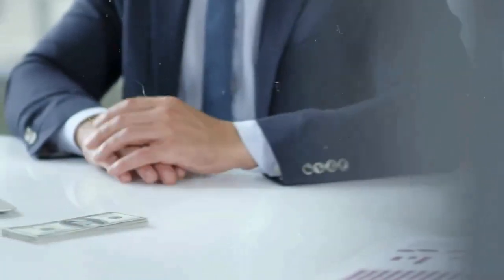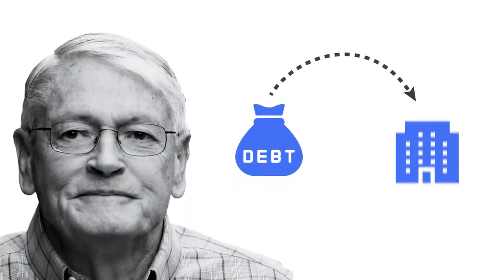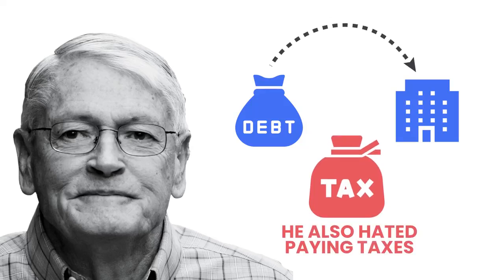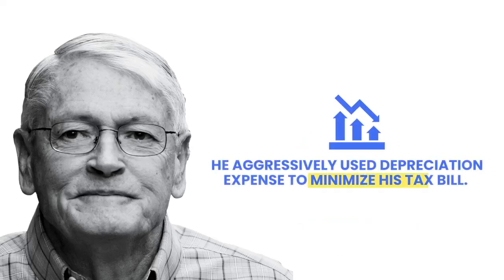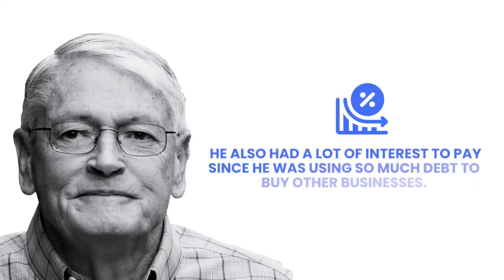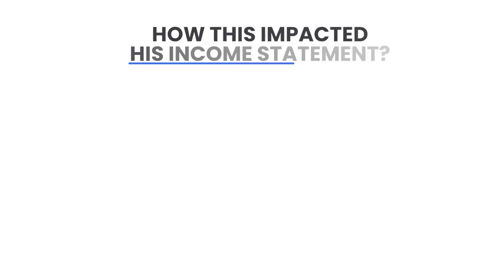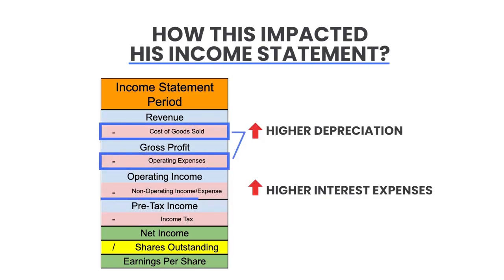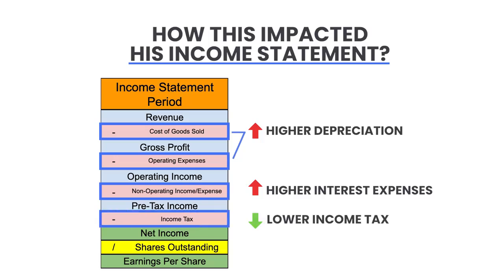Why go through all this financial work to calculate EBITDA in the first place? EBITDA was invented by John Malone, one of the best owner-operators of all time. He became a billionaire by buying and operating cable companies in the 1970s, 80s, and 90s. Malone loved using debt to buy other cable companies and aggressively used depreciation expense to minimize his tax bill. This strategy led to higher depreciation and higher interest expense, which lowered his tax bill but also lowered net income — creating a problem since bankers used net income to determine how much they would lend.